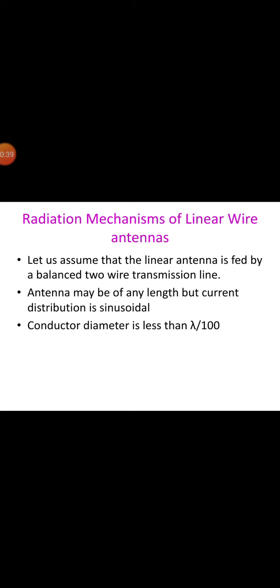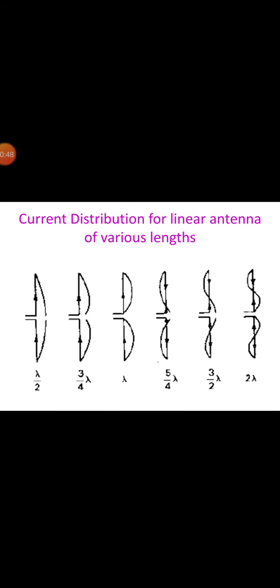Examples of approximate natural current distribution for a number of thin linear center-fed antennas of different lengths are illustrated. The currents are in phase over each lambda/2 section and in opposite phase over the next. This diagram shows the current distribution for a linear antenna of various lengths.